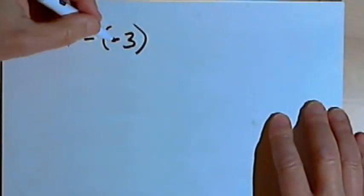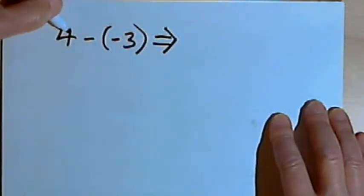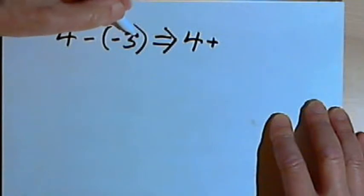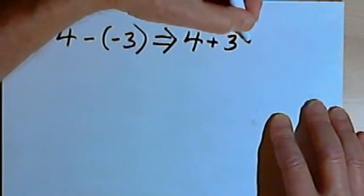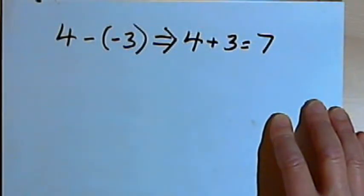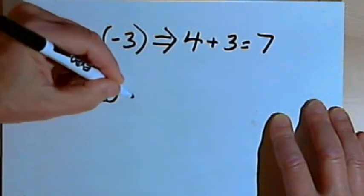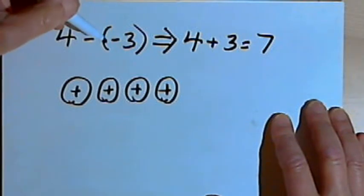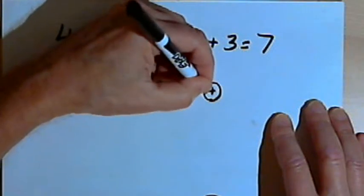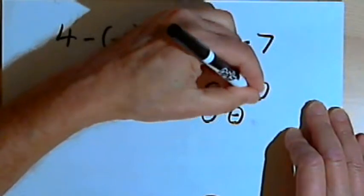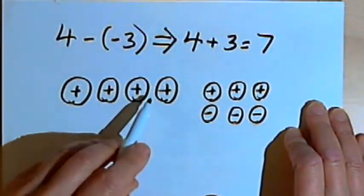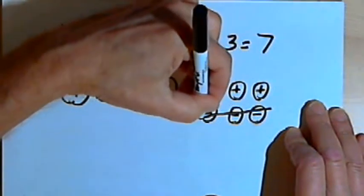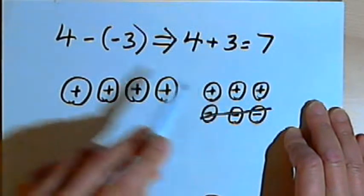Here I've got 4 minus negative 3. I turn this into an addition problem: instead of 4 minus, I make it 4 plus, and instead of negative 3, I make it positive 3 — so this becomes 4 plus 3, which is 7. Visually, I get 4 positive chips and want to take away 3 negative chips. I don't have any, so I add 3 pairs of positive and negative chips — like adding zero. Then I cross out those 3 negative chips and I'm left with 7 positive chips, which matches the arithmetic answer.